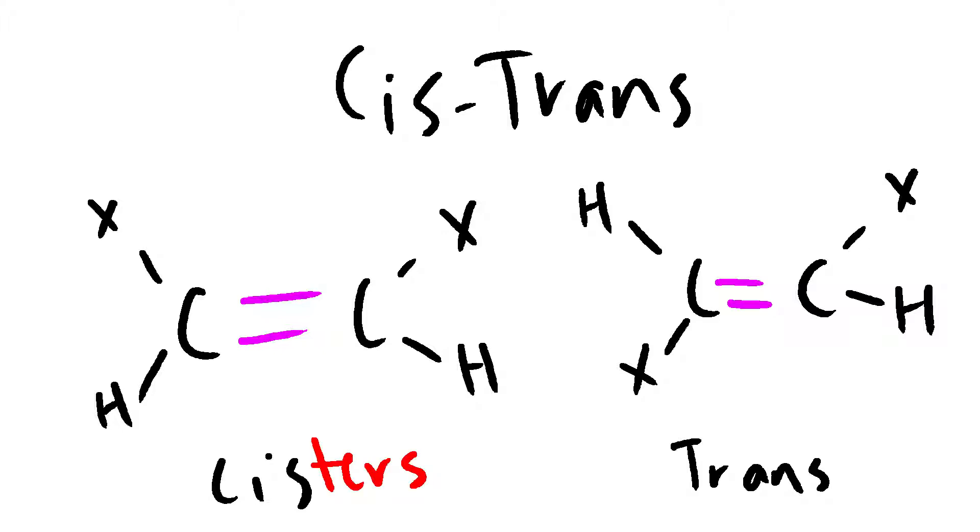Sisters are similar, so cis means that the element is on the same side of each other. Trans means you have to transit all the way across the molecule, so elements are on opposite sides.